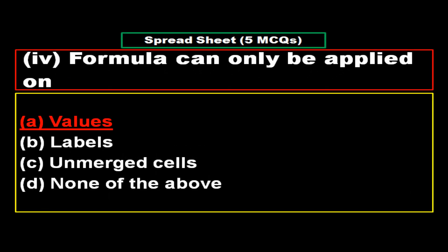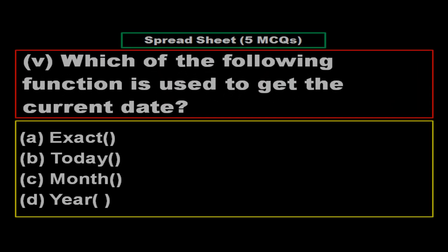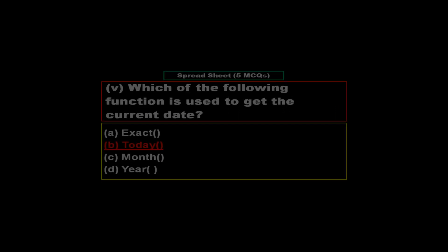Which of the following function is used to get the current date? Options: Option A: Exact, Option B: Today, Option C: Month, Option D: Year. And the right answer is Option B: Today.